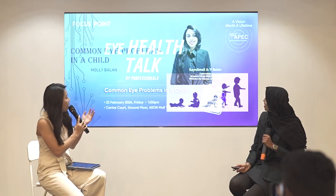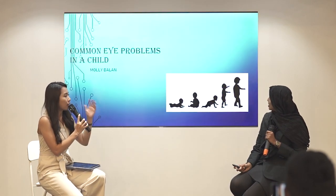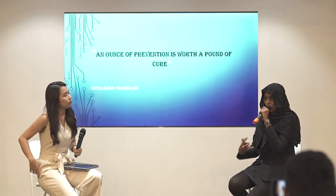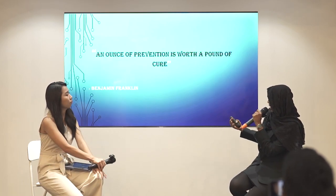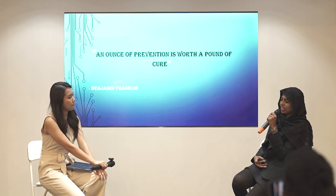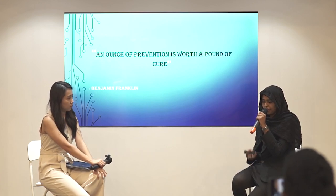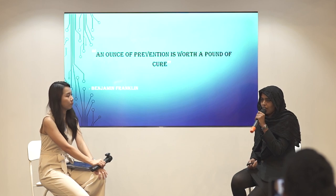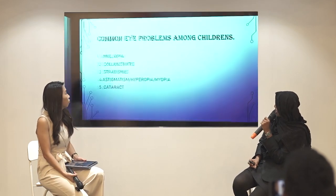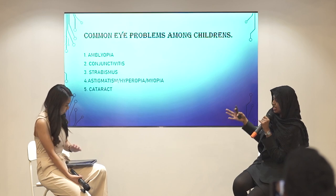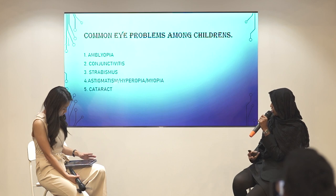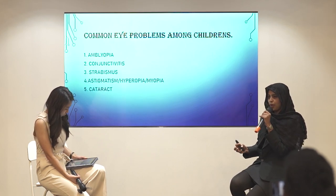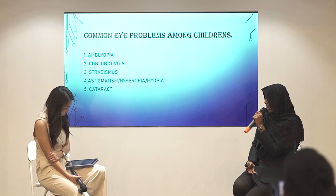Let's move on to the next slide. What are the common eye problems in a child? Before I start on the common problems, I would like to mention: an ounce of prevention is worth a pound of care, which means prevention is always better. The common eye problems I would like to present among children are: amblyopia, conjunctivitis, strabismus, astigmatism, hyperopia — which are refractive errors — and also cataract.